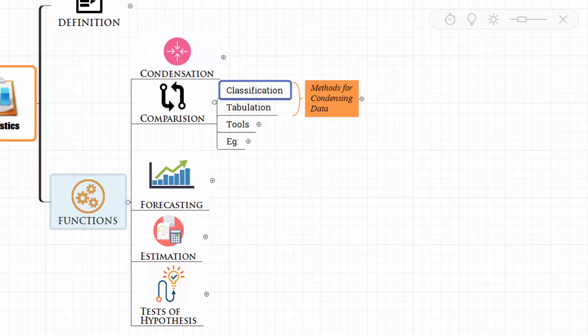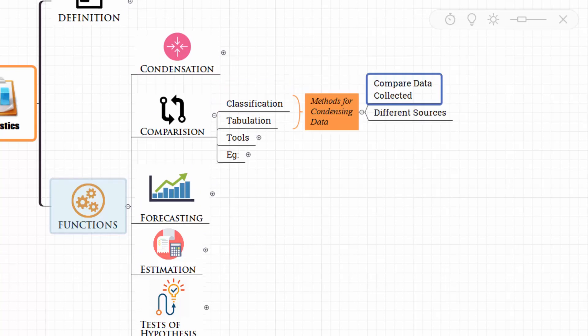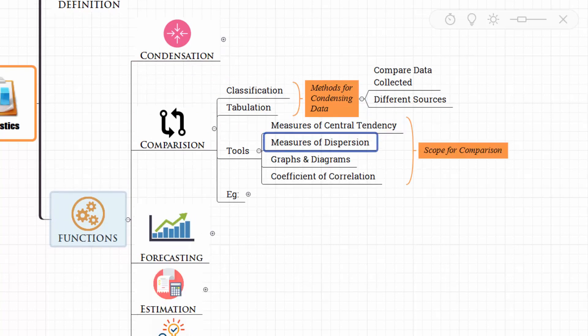Then comes comparison. We can condense the data by classification and tabulation. These methods for condensing the data enable us to compare data collected from different sources. We have tools like measures of central tendency, measures of dispersion, graphs and diagrams, coefficient of correlation, which have scope for comparison.